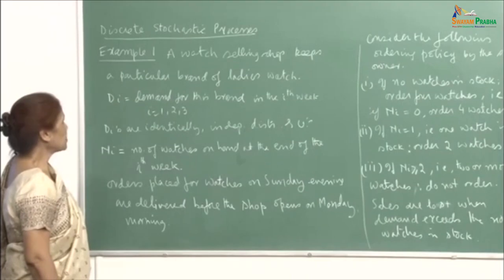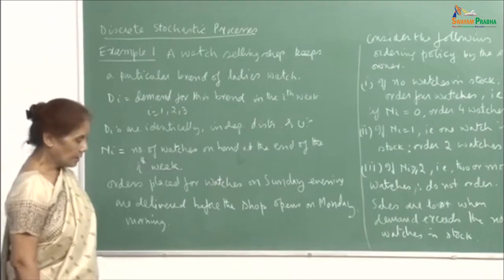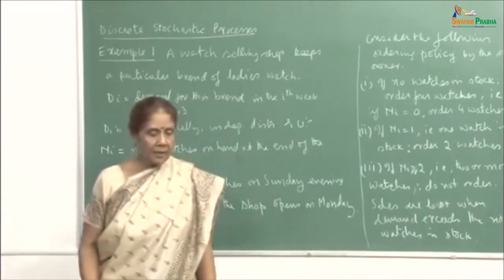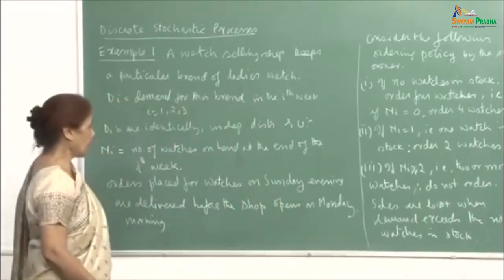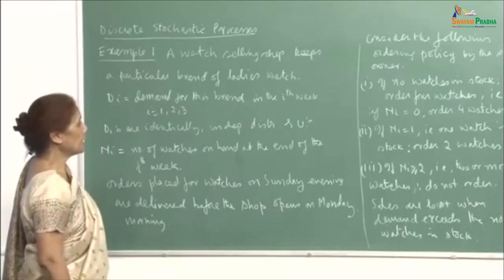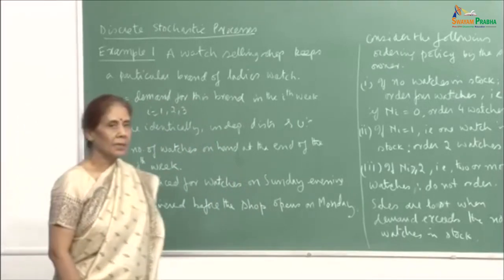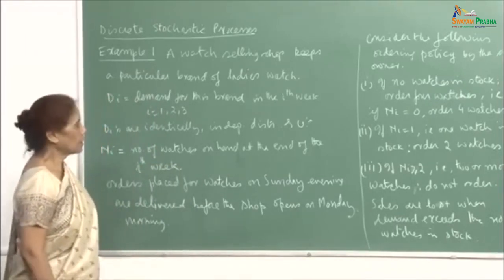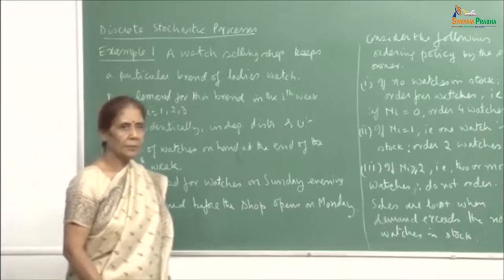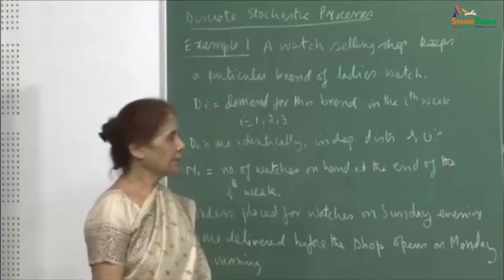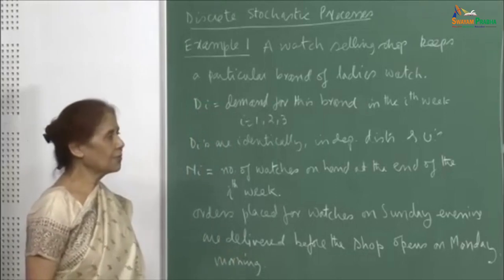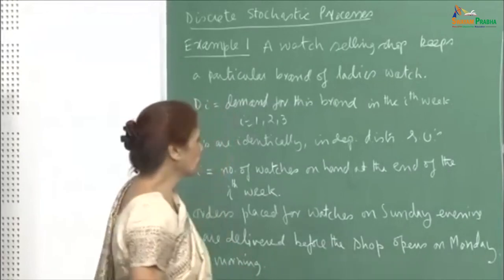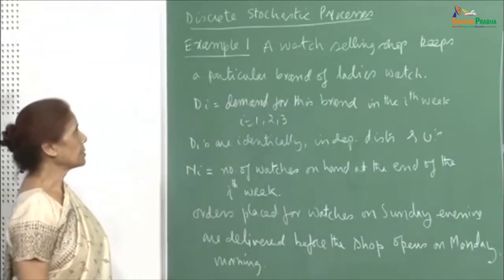I am going to talk about discrete stochastic processes. Without spending time first trying to define stochastic processes in abstraction, I would prefer to give you examples and then try to come to a conclusion, and hopefully be able to define. By that time, you would have formed your own definition of a stochastic process. Here we are going to first talk about discrete stochastic processes.